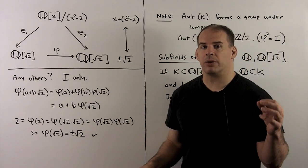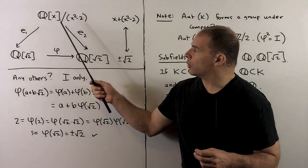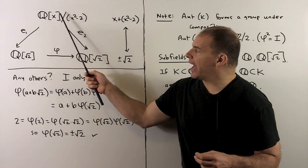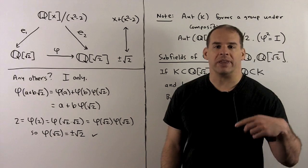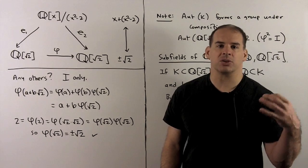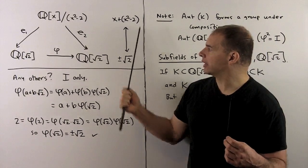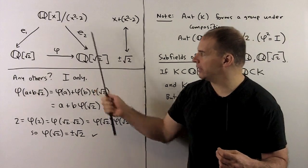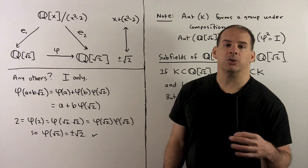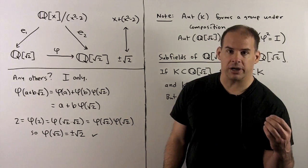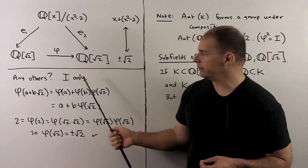To clarify the isomorphisms: for e₁ we send the coset of x to √2, so for the inverse we send √2 to the coset of x, and likewise for e₂. Now, do we have any other field automorphisms? The answer is only the identity.